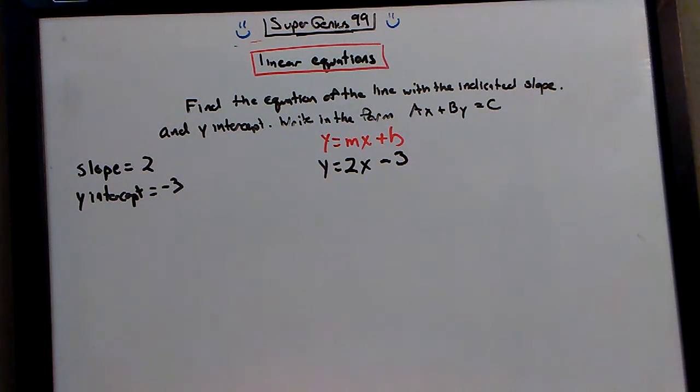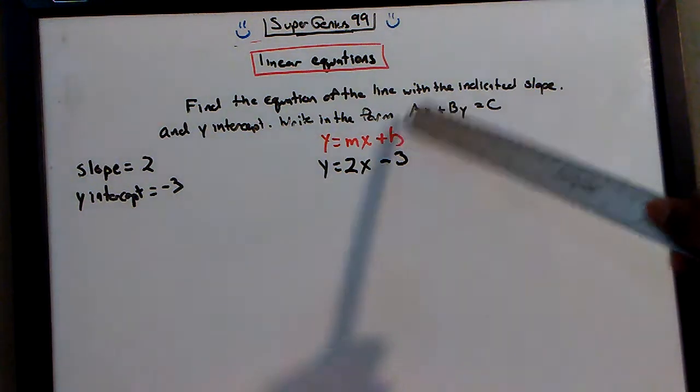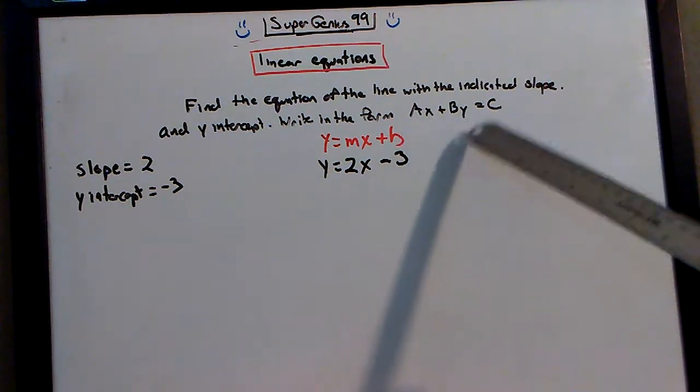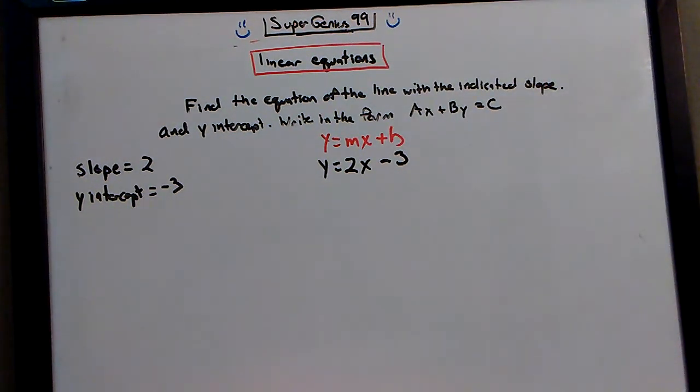Are we done? No. Because it didn't tell us to write in this form. It told us to write in this form, ax plus by equals c. So basically, just get everything else over, and just make sure that a and b are whole number positive coefficients.